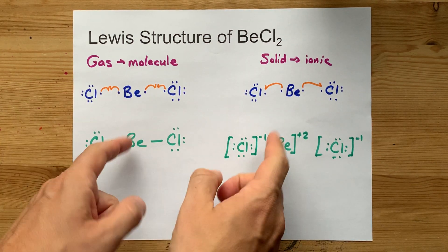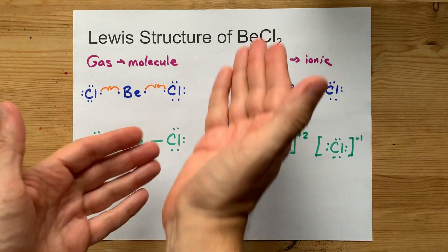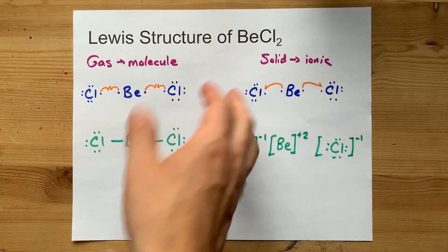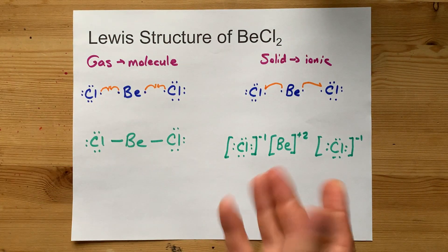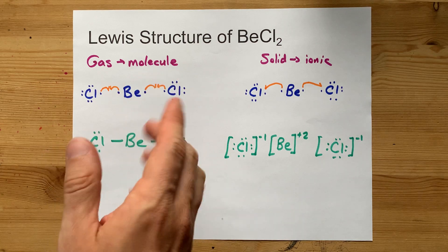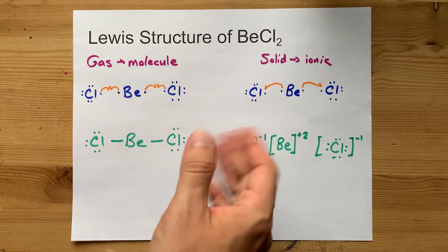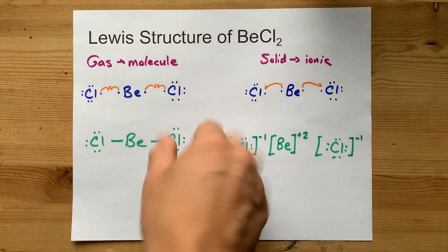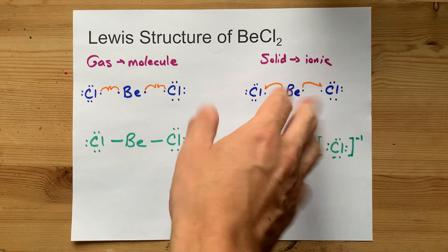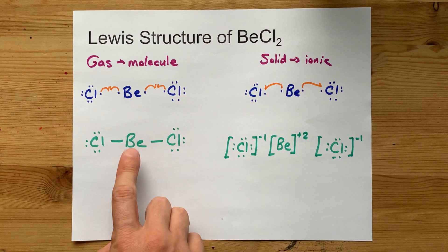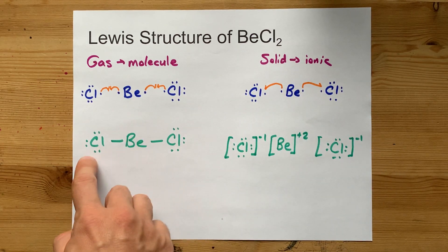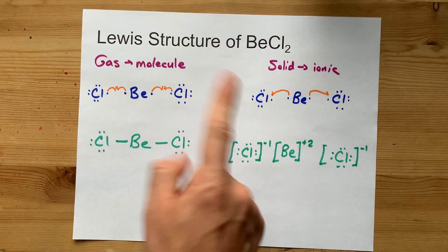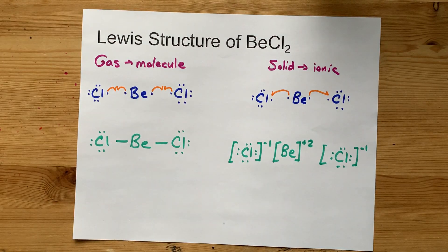You should get full credit for either of these, because this is one of those chemicals that is ambiguous — it's not for sure one or the other, it can kind of change. That's where we're at. I think your teacher wants the covalent one, so give it to them. Best of luck.